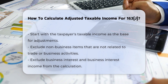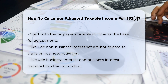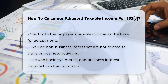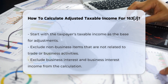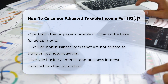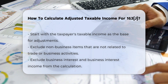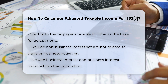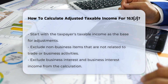Exclude Non-Business Items. ATI is computed without regard to any item of income, gain, loss, or deduction that is not properly allocable to a trade or business. This means you exclude any items that are not related to the taxpayer's business activities.